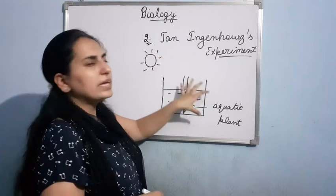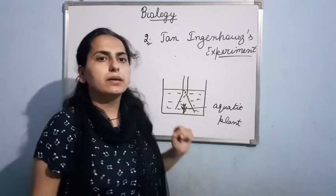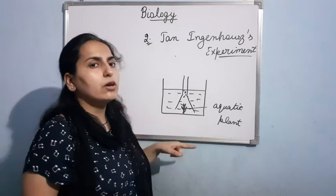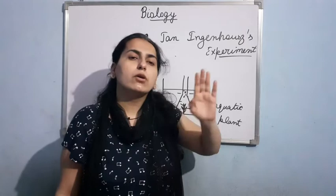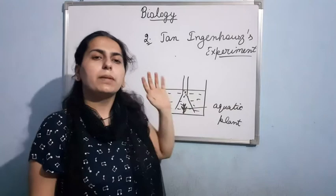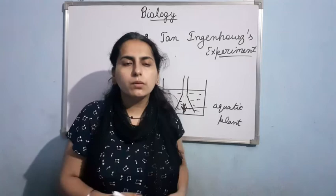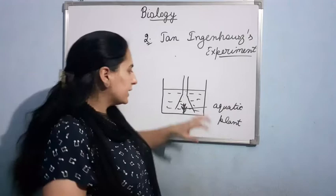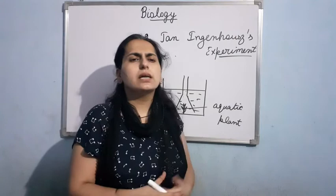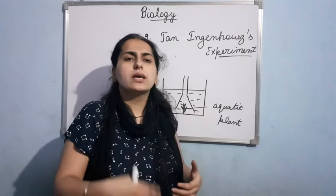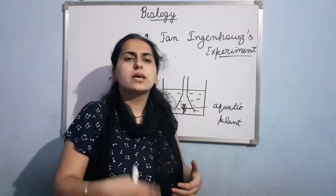Next, he placed this apparatus in the dark. In dark conditions, the plant will not be able to perform the process of photosynthesis. When the apparatus was kept in the dark, he observed that bubbles were not there. If the bubbles are not there, then he concluded that oxygen is not being produced — meaning the process responsible for the production of oxygen is not taking place when the light source is not there. So basically, light is necessary for this process, and this process restores the amount of oxygen used by the burning candle and by the mouse through respiration.